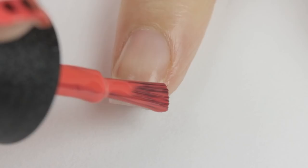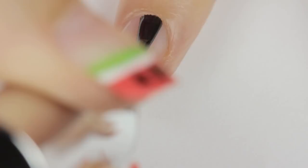Next, paint the tip of your nail with a coral polish. The easiest way to do this is by keeping the brush still and slowly rotating your finger.